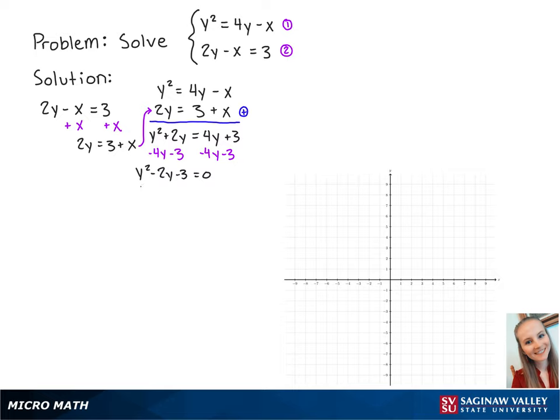Now we can factor the left side to be y minus 3 times y plus 1, which is equal to 0. So now we can see that y is equal to 3 or negative 1.